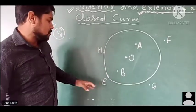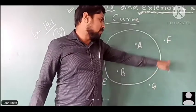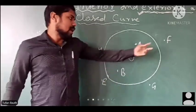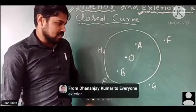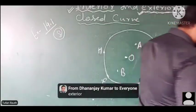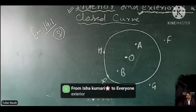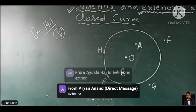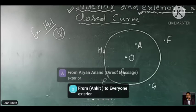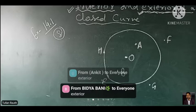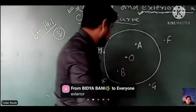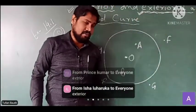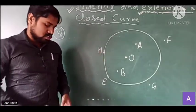E, F, and G — quickly tell me where these three points are lying. Exactly — Dhananjay, Isha, Aiyusi, Anket, Vidya Vani — very good, excellent answers! All three points E, F, and G are definitely lying outside the circle, meaning they are in the exterior of the circle.